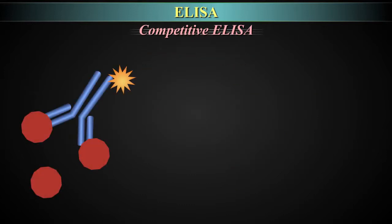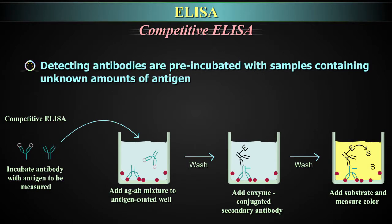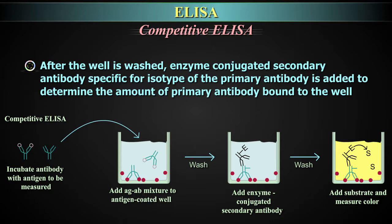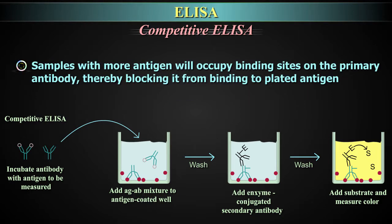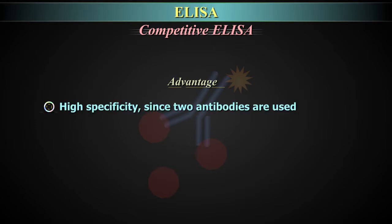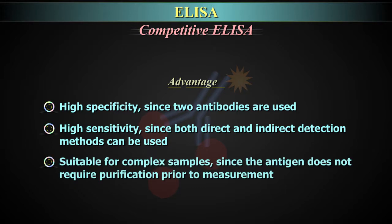Competitive ELISA is similar to a direct ELISA in that antigen can be directly adsorbed to the plate. However, the detecting antibodies are pre-incubated with samples containing unknown amounts of antigen. After the well is washed, enzyme-conjugated secondary antibody specific for the isotype of the primary antibody is added to determine the amount of primary antibody bound to the well. Samples with more antigen will occupy binding sites on the primary antibody, blocking it from binding to plated antigen. Conversely, samples with less antigen will have more antibodies available to bind to the plated antigen and return a higher signal. Advantages: high specificity since two antibodies are used; high sensitivity since both direct and indirect detection methods can be used; suitable for complex samples since the antigen does not require purification.